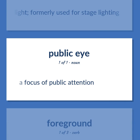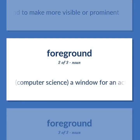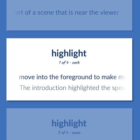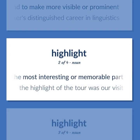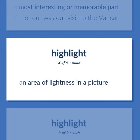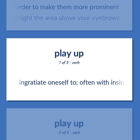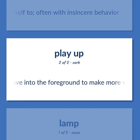Foreground: a focus of public attention. Move into the foreground to make more visible or prominent. In computer science, a window for an active application. The part of a scene that is near the viewer. Highlight: move into the foreground to make more visible or prominent — the introduction highlighted the speaker's distinguished career in linguistics. The most interesting or memorable part — the highlight of the tour was our visit to the Vatican. An area of lightness in a picture. Apply a highlighter to one's cheeks or eyebrows in order to make them more prominent — highlight the area above your eyebrows.